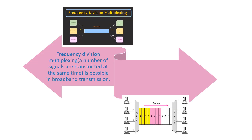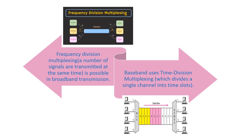Broadband uses frequency division multiplexing, where a number of signals are transmitted at the same time. But in baseband, time division multiplexing is used, which divides a single channel into time slots.